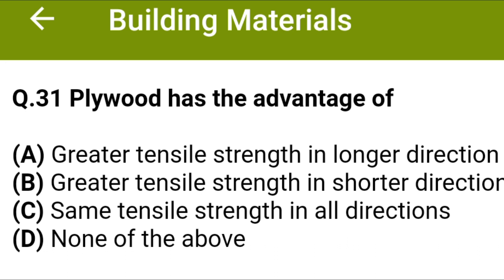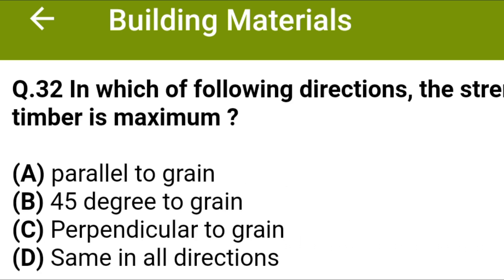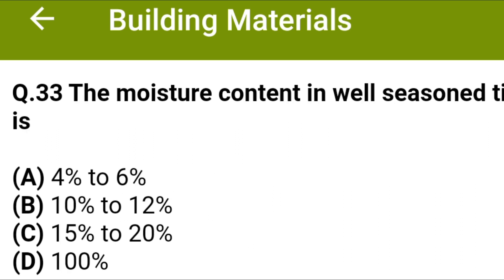Plywood has the advantage of Option A greater tensile strength in the longer direction, Option B greater tensile strength in the shorter direction, Option C same tensile strength in all directions, Option D none of the above. The correct answer is Option C, same tensile strength in all directions. In which of the following directions is the strength of timber maximum? Option A parallel to grain, Option B 45 degrees to grain, Option C perpendicular to grain, Option D same in all directions. The correct answer is Option A, parallel to grain.